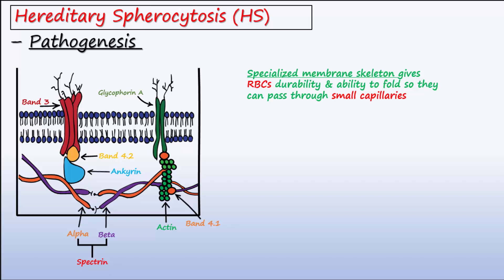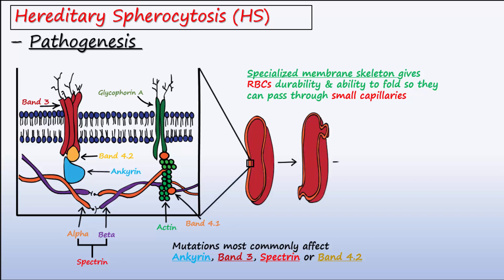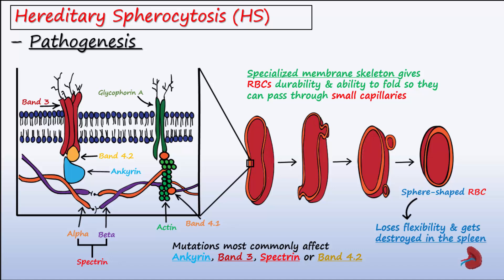Pathogenic mutations most commonly affect ankyrin, band 3, spectrin, or band 4.2, leading to destabilization of the lipid bilayer and shedding of membrane fragments, forcing the RBCs to assume the smallest possible diameter — a sphere. A weak and unstable RBC membrane skeleton reduces the cell's ability to fold and leads to early destruction of RBCs in the spleen.